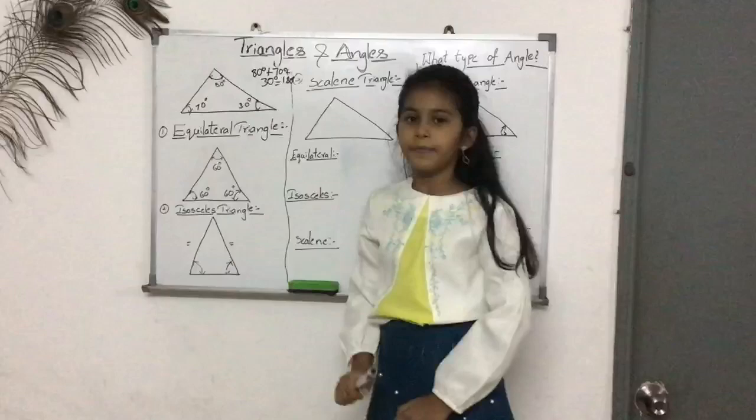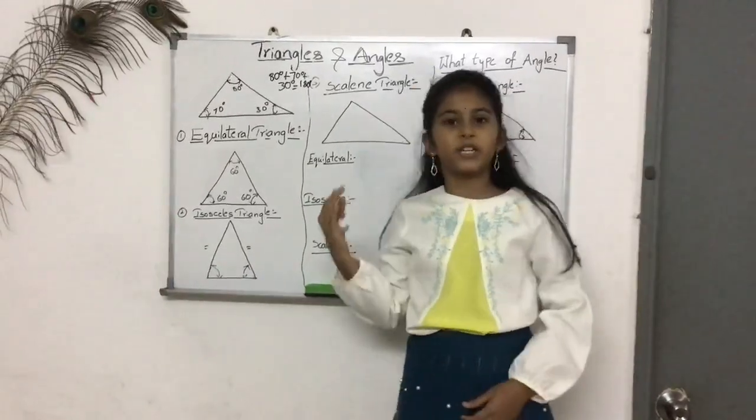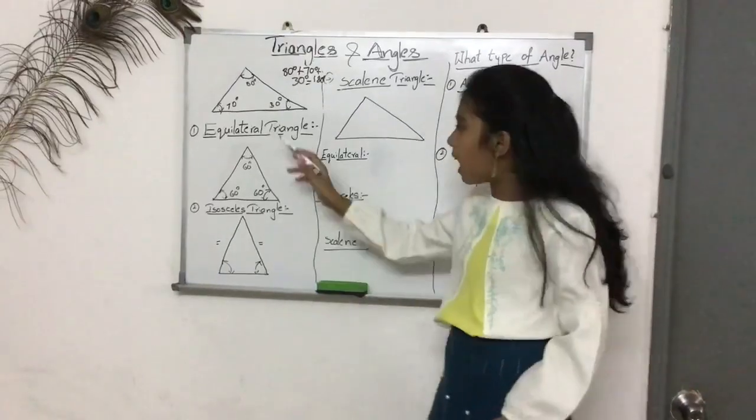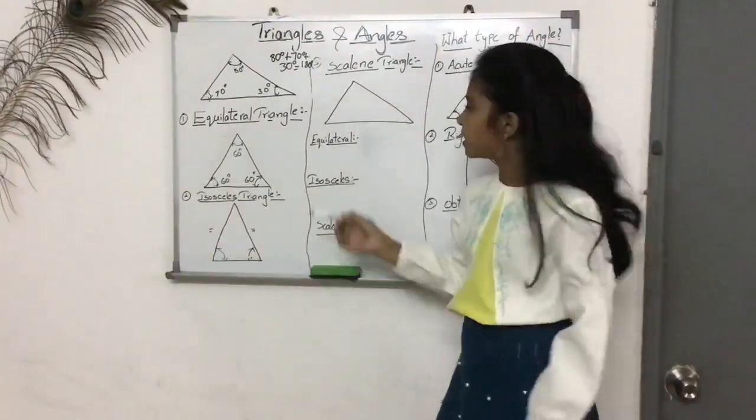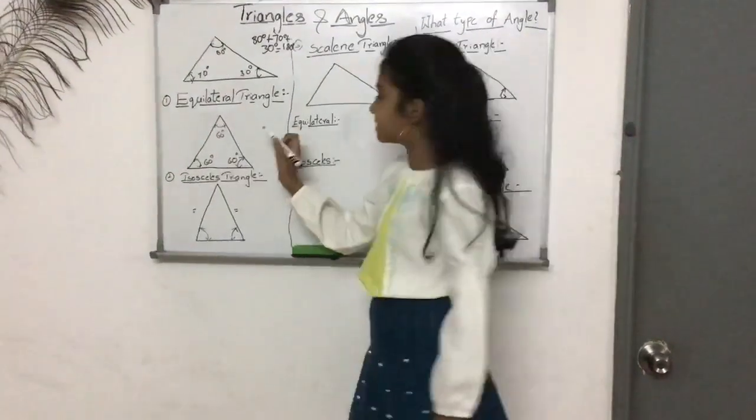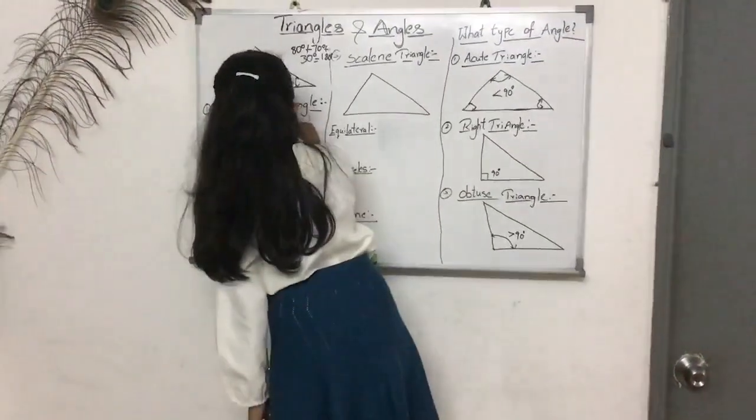So this is how you add. Now, three special names are given to triangles so that we know how many equal sides there are. So this is an equilateral triangle. All sides equal and all angles equal.